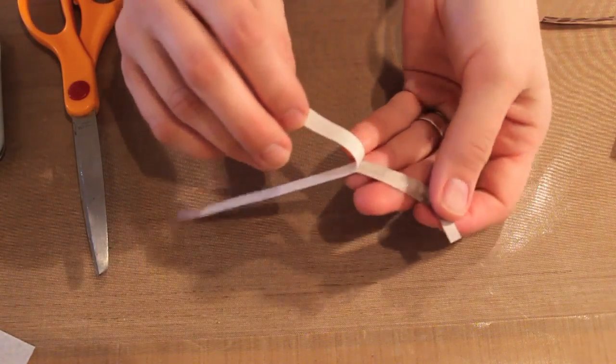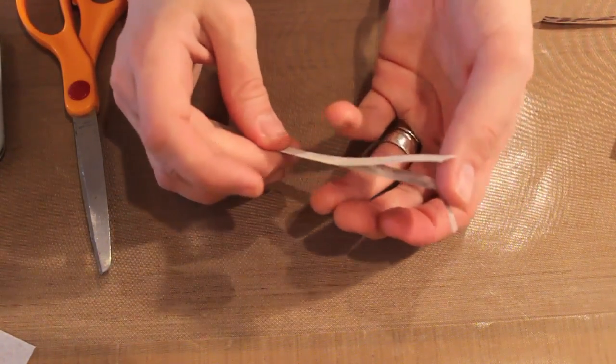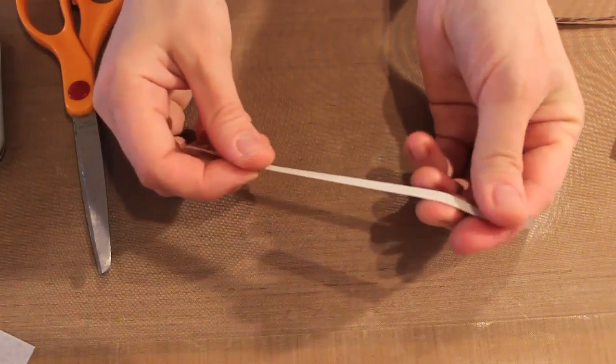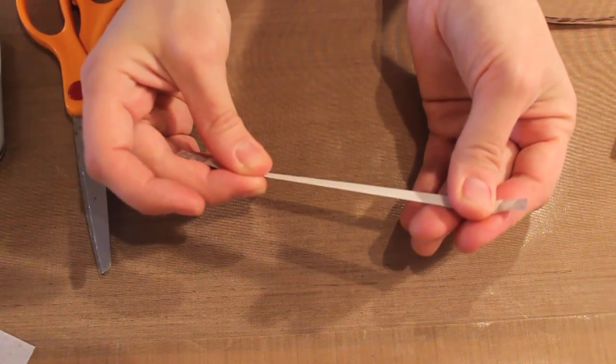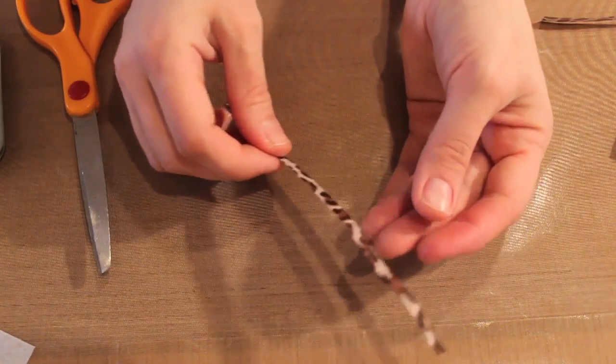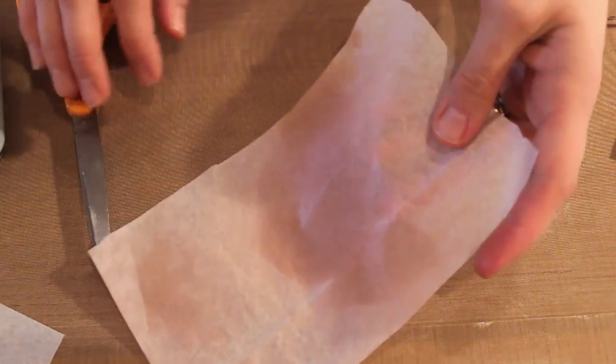So once you get the liner off then you can go ahead and put this down onto your paper or you can make a bunch of these and leave the liner on and just keep it for later. Now that's one way of doing washi tape.